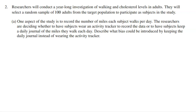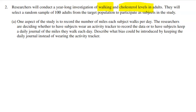Researchers will conduct a year-long investigation of walking and cholesterol levels in adults. They will select a random sample of 100 adults from the target population to participate as subjects in the study. They're obviously looking at the relationship between walking and cholesterol levels, so our explanatory variable is walking and our response variable is cholesterol levels. Because it's a random sample, we could actually apply what we learn from this study to all adults from the target population — as long as you select randomly, you can infer to that population.